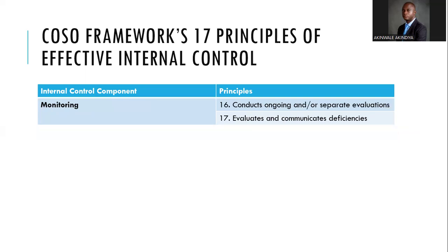Principles sixteen and seventeen map to monitoring, which must be continuous. Principle sixteen: conduct ongoing and separate evaluations. You need ongoing, year-round evaluation — a system of monitoring and review. That is why we need internal control, internal audit, external audit, risk management, the information security team, the SOC team, and technology tools such as VAPT — vulnerability assessment and penetration testing — all of which add up to the monitoring system.